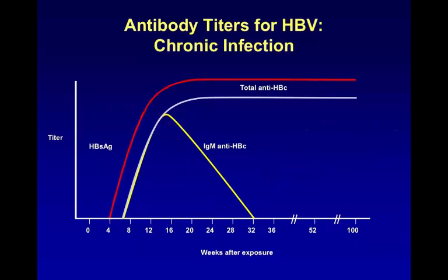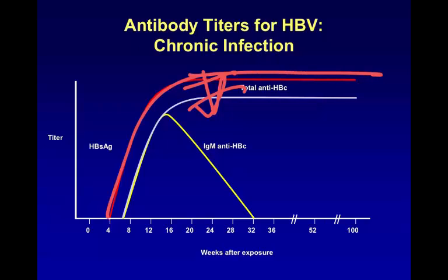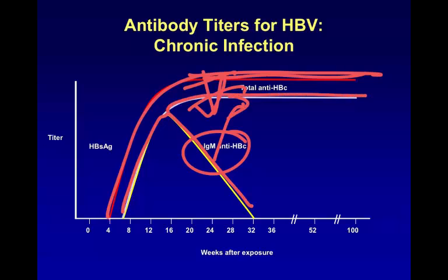In chronic infection, there is no development of surface antibody. Consequently, there is a rise in surface antigen and the surface antigen never falls — you just see continued surface antigen and continued production of virus. You'll see the IgM go up like it did in acute infection and then fall, and along with it, core antibody will develop and be persistent. Importantly, core antibody is not protective against the virus, so the virus will not disappear even though you make core antibody. It only disappears when you make surface antibody.